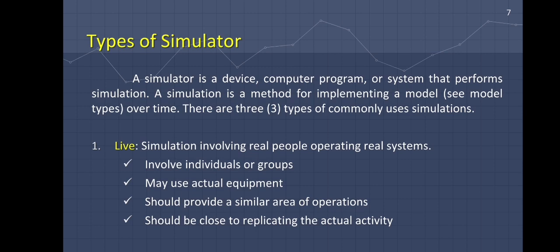What are the different types of simulator? A simulator is a device, computer program, or system that performs simulation. A simulation is a method for implementing a model over time. There are three types of commonly used simulations: live, virtual, and constructive. Live simulation involves real people operating real systems.